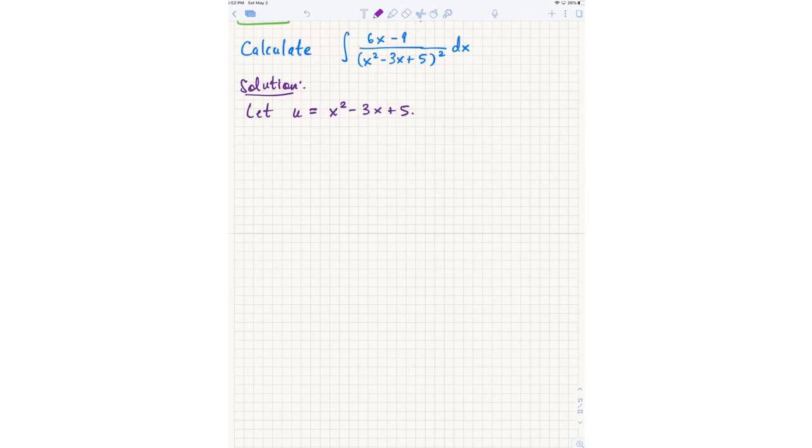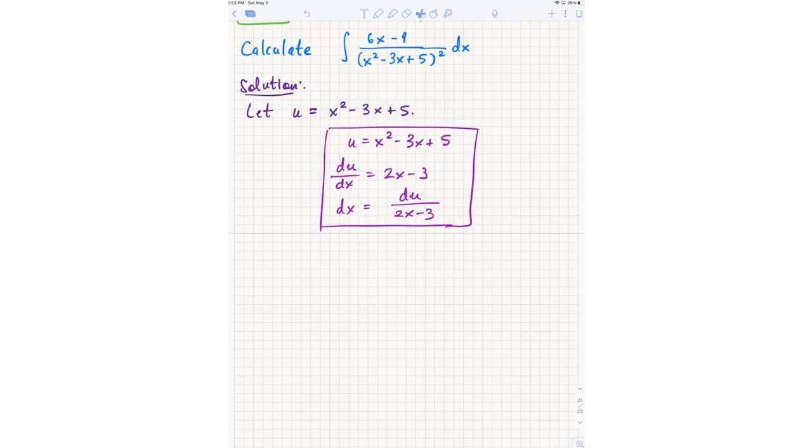So we start our translation table. I find the derivative, and then I solve for dx. Now, if you did the u substitution correctly, we should have cancellation.